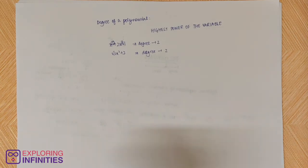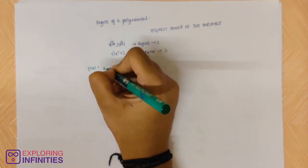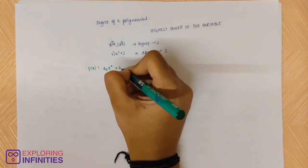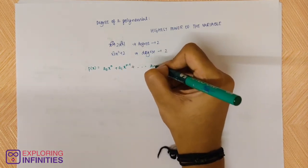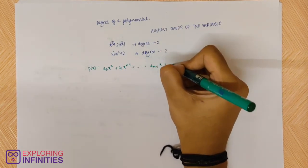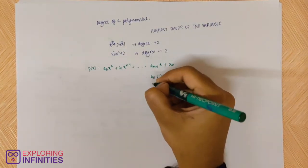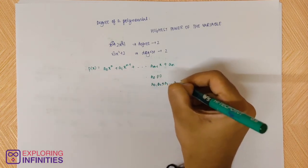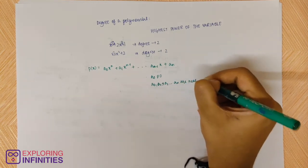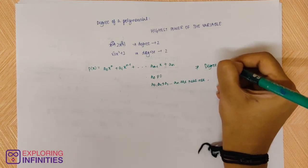To put it in a mathematical way: if P(x) = a₀xⁿ + a₁xⁿ⁻¹ + ... + aₙ₋₁x + aₙ, where a₀ ≠ 0 and a₀, a₁, a₂, ..., aₙ are real numbers, then the degree is equal to n.